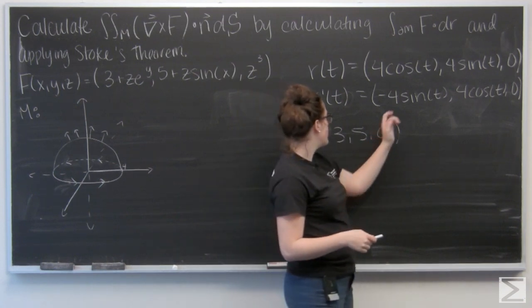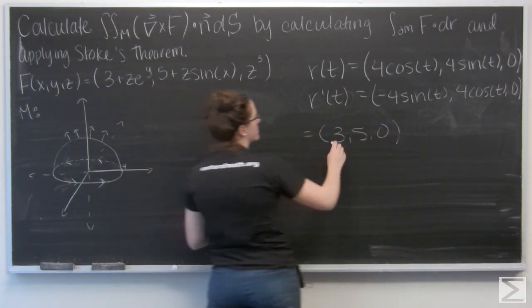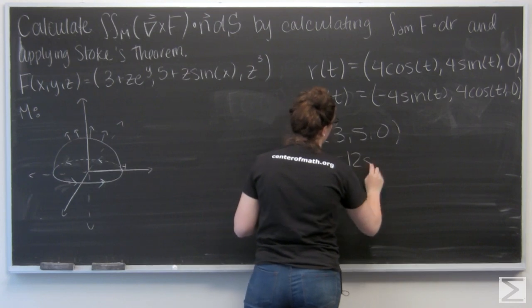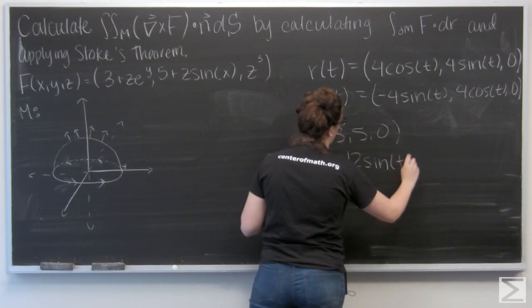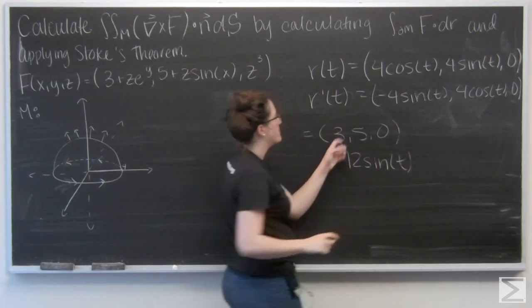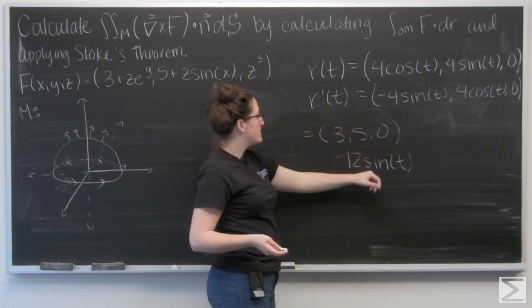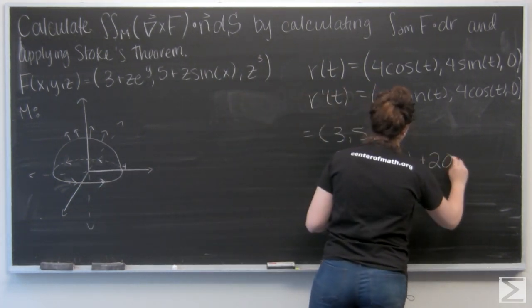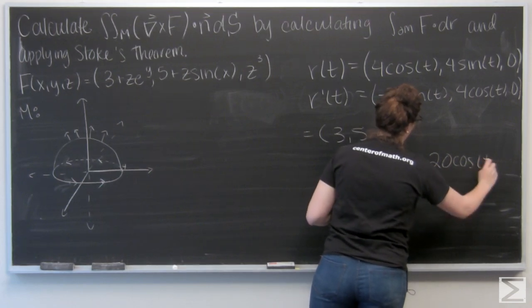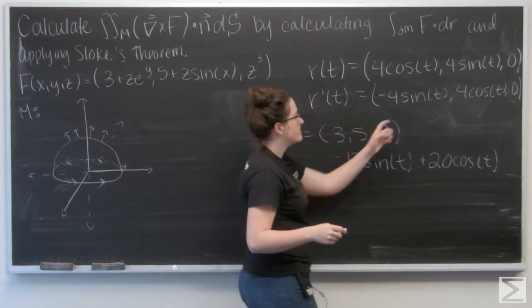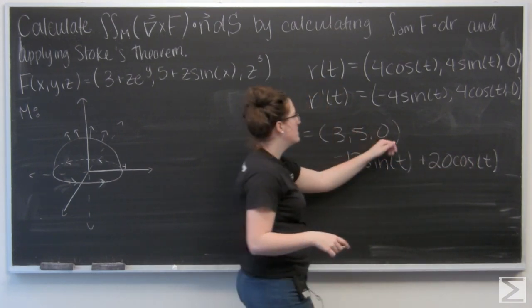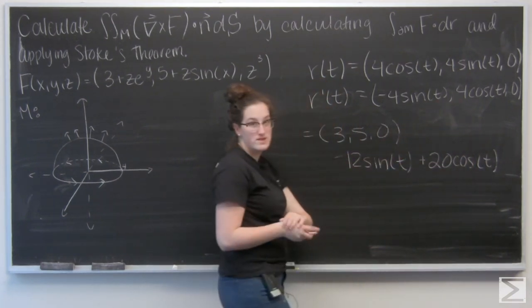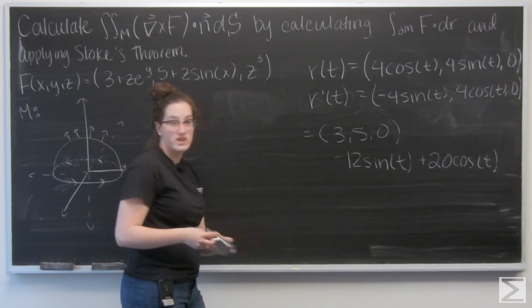So I want to dot that with this vector here. So 3 times negative 4 sine of T gives me negative 12 sine of T plus 5 times 4 cosine of T, which gives me 20 cosine of T. 0 times 0 is 0. So this is the function that I want to integrate.